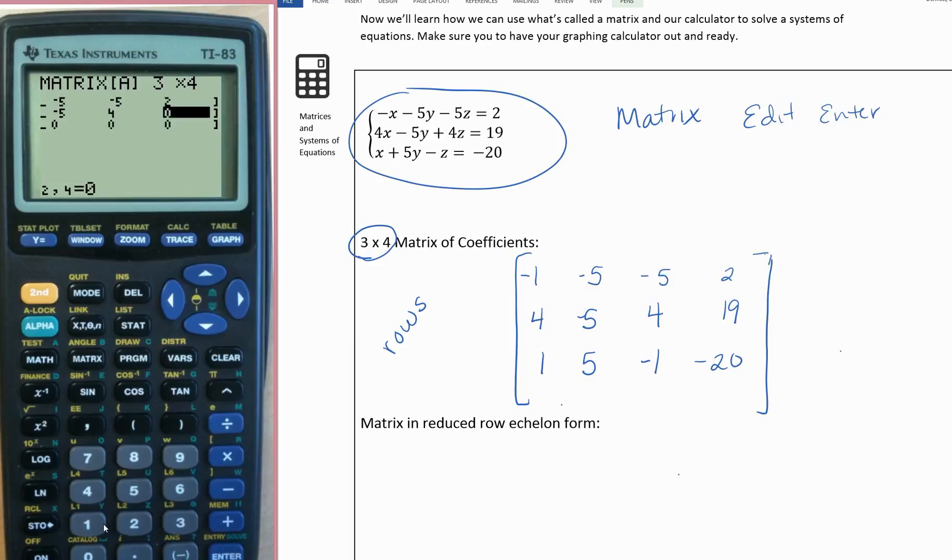4, 19. You want to be really careful. The biggest mistake I see is students putting in a number wrong, which will screw everything up. Make sure you hit enter after that last one.